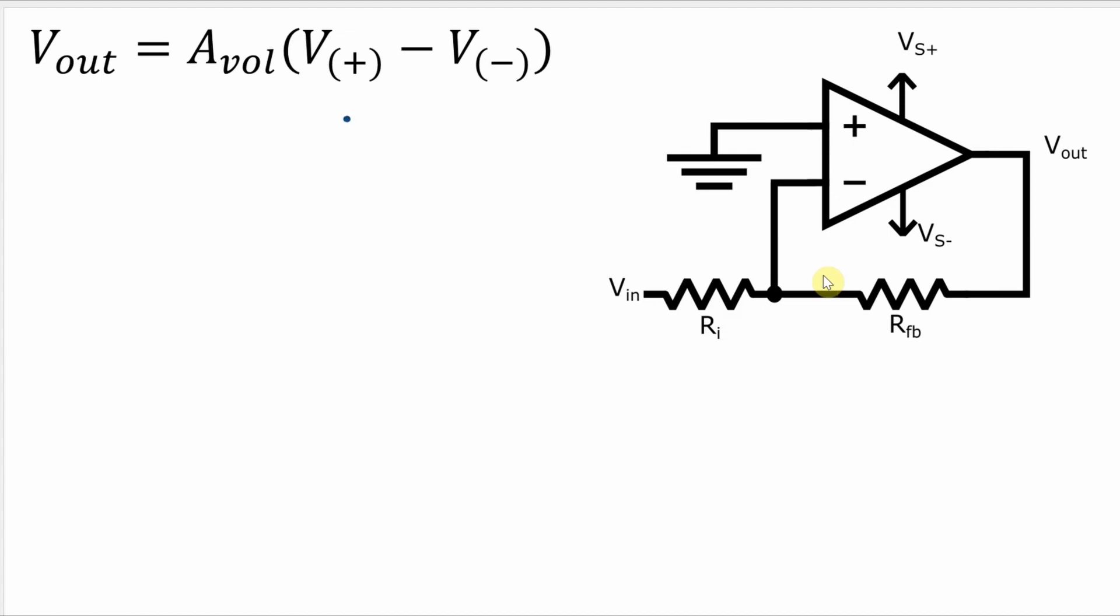So the voltage at the non-inverting terminal is at ground so that's zero volts. The voltage at the inverting terminal that one's a little bit trickier. It's the voltage here with respect to ground and so what we're going to need to do is do a voltage divider between RI and RFB.